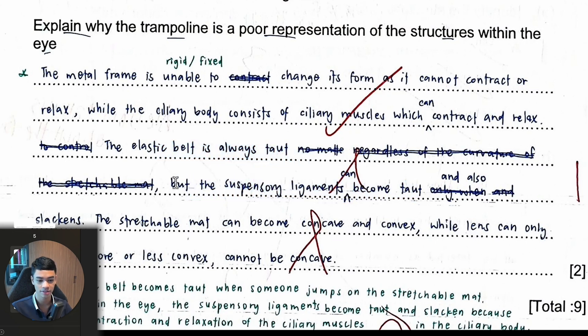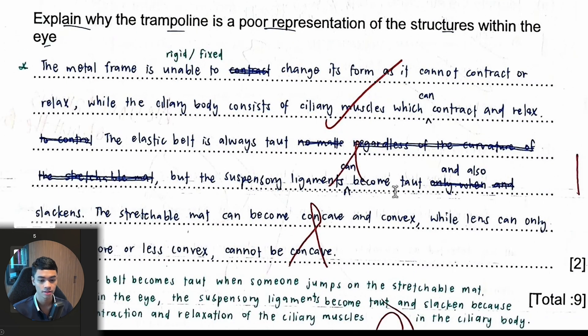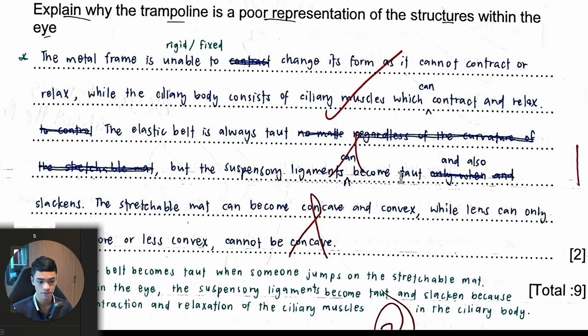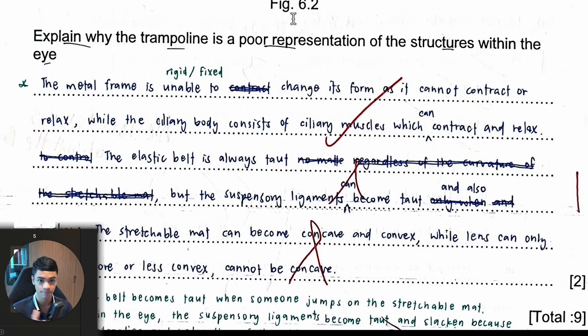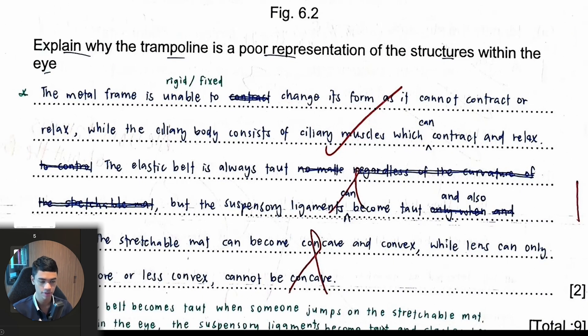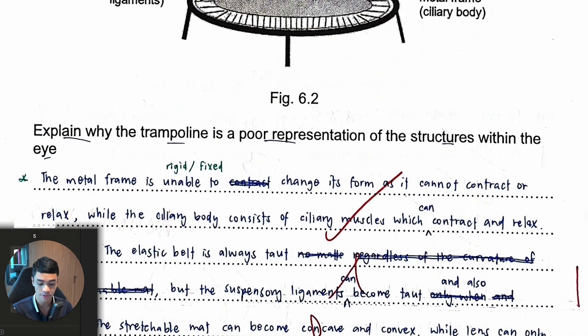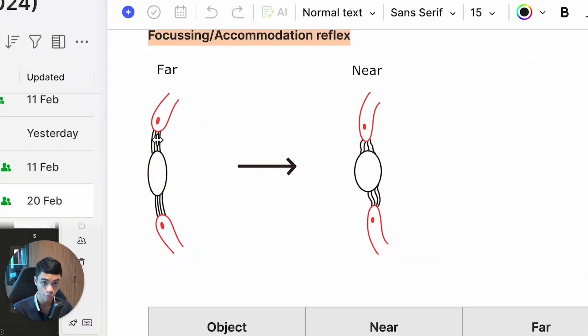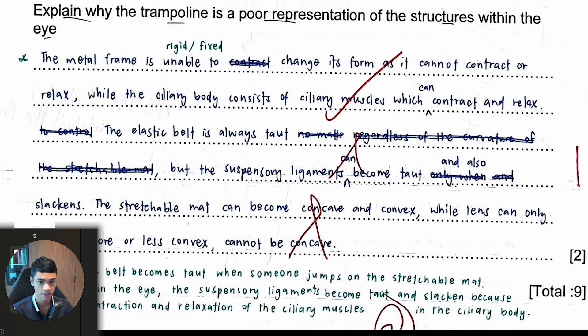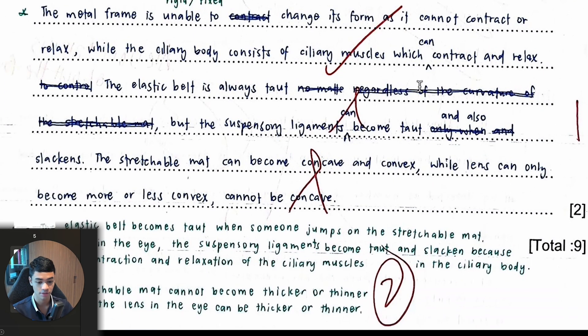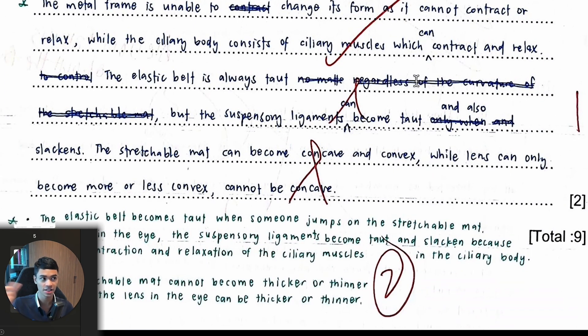Suspensory ligaments can be taut and also slackened. I think the point that you compare is not strong enough. What is a stronger point, a better comparison? The keyword there is elastic belt. You can imagine a trampoline, it is elastic, can stretch. But a suspensory ligament cannot stretch, it's like a rope, like the dental floss I showed in the class. Can you stretch it? No. So that is a big difference I would use instead. I would say that the suspensory ligaments cannot be stretched.